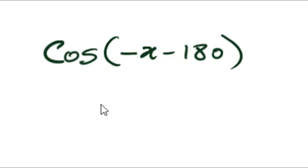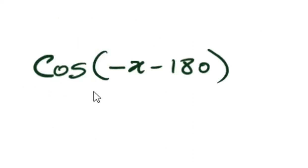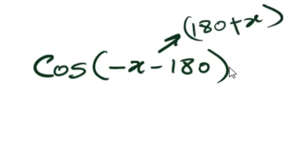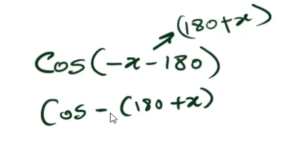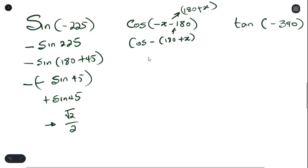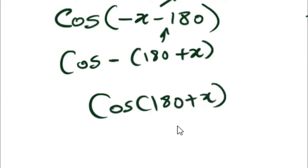For the next question, we can use the quadrants, but if we don't remember them we use the negative angle approach. This looks like 180 plus x, so we rewrite it in terms of 180 plus x, which is in the third quadrant. Multiplying: negative times 180 gives negative 180, and negative times x gives negative x, which matches what we have. From our negative angles, for cos we treat it like the fourth quadrant. So cos of (negative 180 minus x) can be written as cos of (180 plus x), and since cos is negative in the third quadrant, the answer is negative cos x.